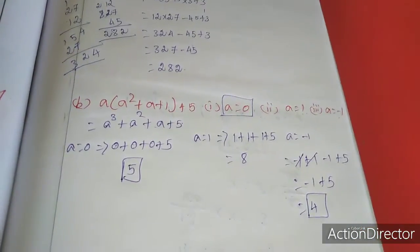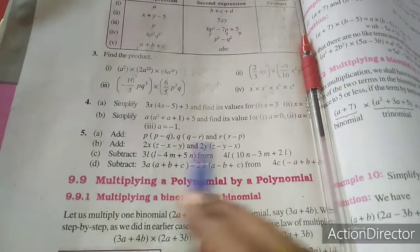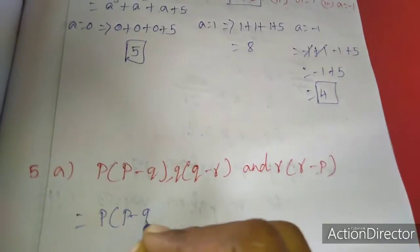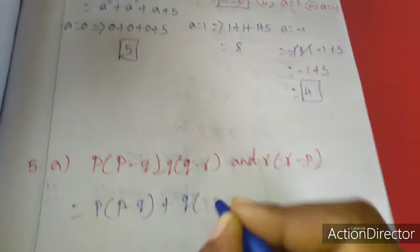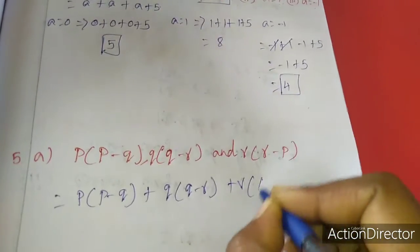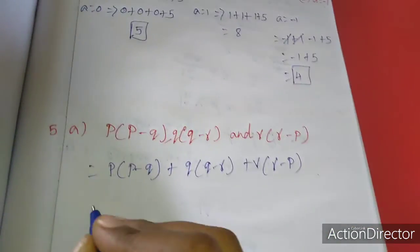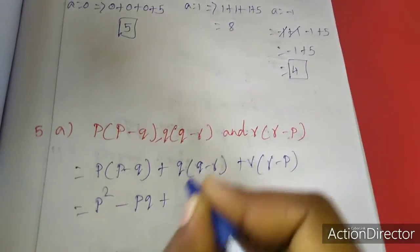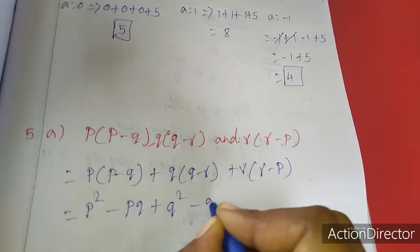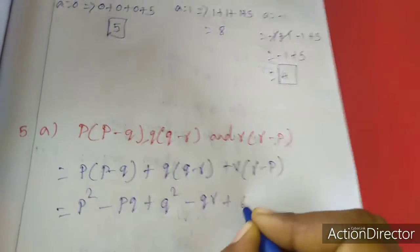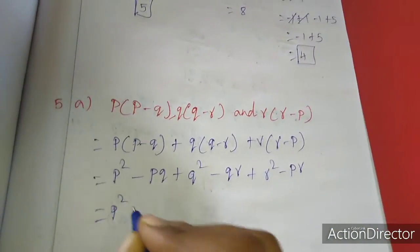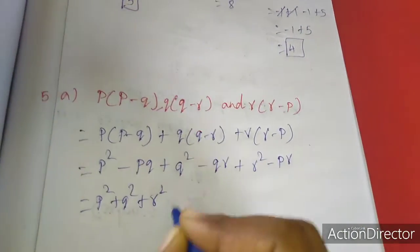Now I will move to the fifth sum. First we want to add this: P(P - Q) + Q(Q - R) + R(R - P). First I am going to multiply inside: P² - PQ + Q² - QR + R² - RP. Collecting terms: P² + Q² + R² - PQ - QR - PR. That's all.